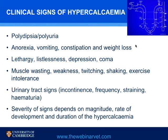In addition to polydipsia and polyuria, the animal may also show signs of anorexia, vomiting, constipation, and weight loss associated with reduced muscle tone in the gastrointestinal tract. There may also be lethargy, listlessness, depression, and coma as hypercalcemia depresses neurological function.